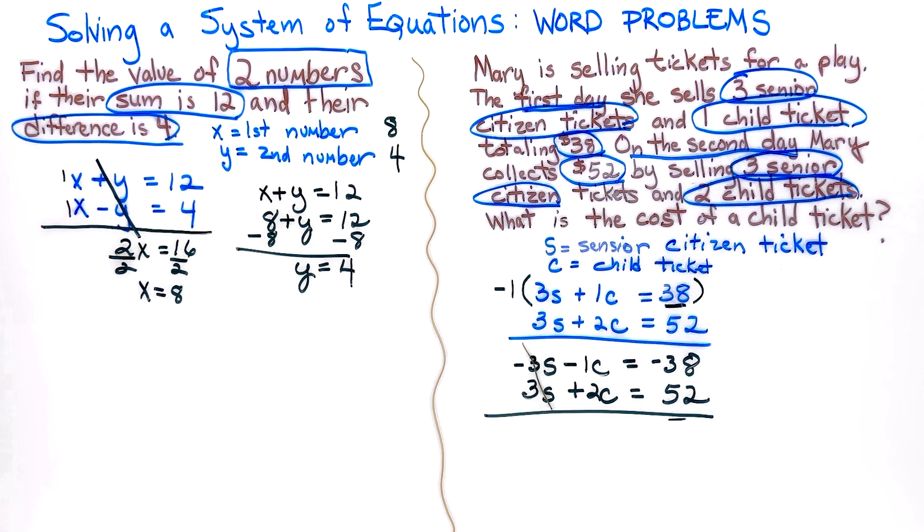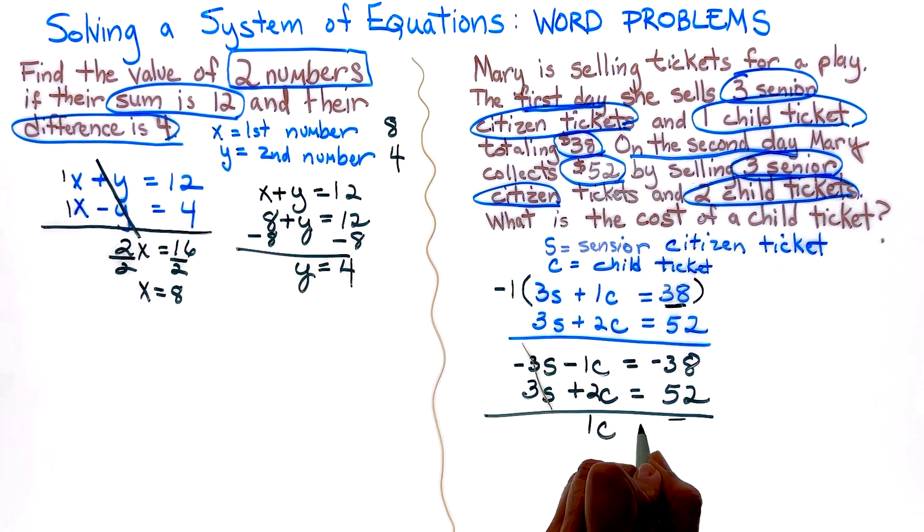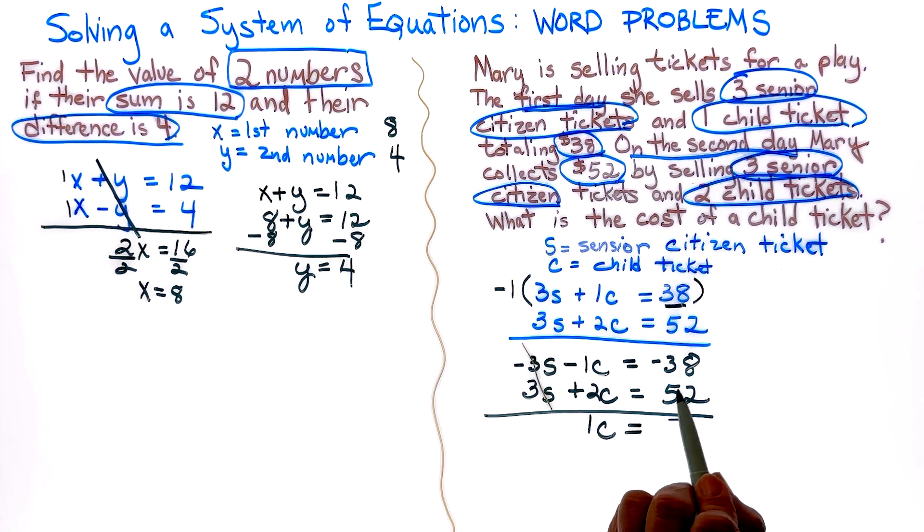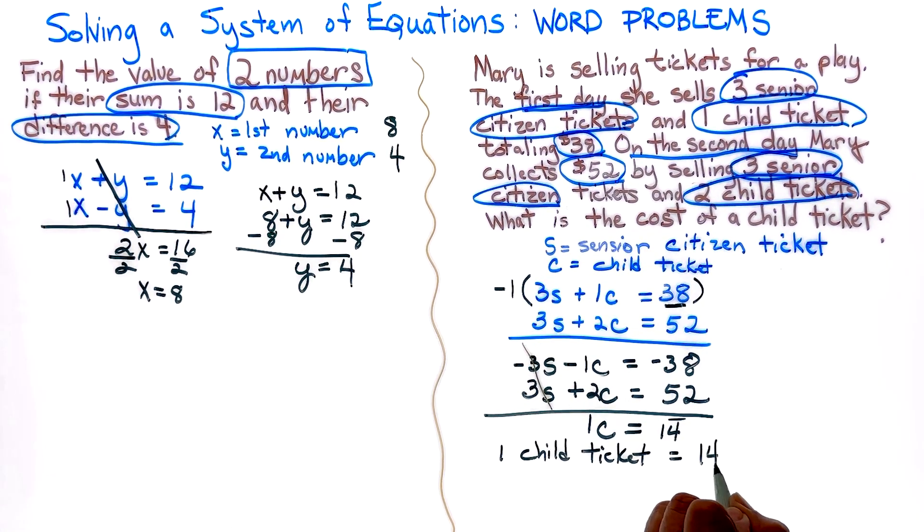So negative one plus two is 1C and negative 38 plus 52 is actually 14. So I know that one child ticket is going to equal $14.